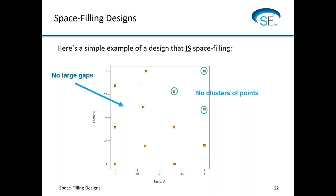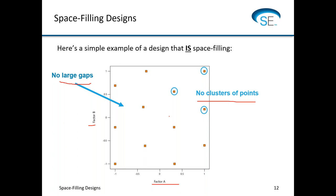Here is an example of a design that is space filling. You can see that the points are spread apart nicely — there are no large gaps and no clusters of points. If we were looking to get information on as many unique locations in our design space as possible, a design like this intuitively makes sense. The points are spread far apart, there are really no gaps, and the points are roughly equidistant from one another. This looks like it fills the space pretty well.